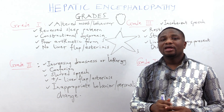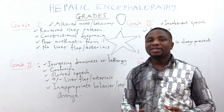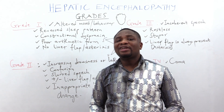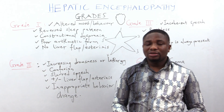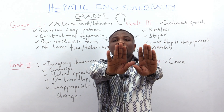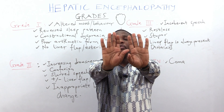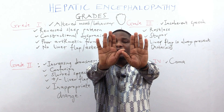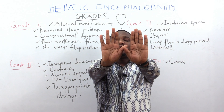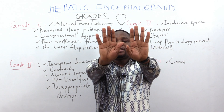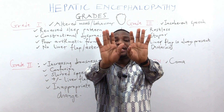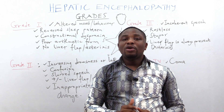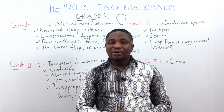Another feature of Grade 1 is that there is no liver flap, or what you call asterixis. How do you elicit asterixis or liver flap? You ask the patient to stretch forth the hand, close the eyes, and cock the wrists backwards. You expect the wrists to remain in a stationary position, but with liver flap or asterixis, you will see the patient flapping the hand as if it is a bird flapping its wings. We call this a flapping tremor, liver flap, or asterixis.